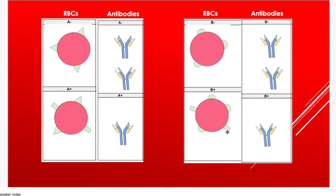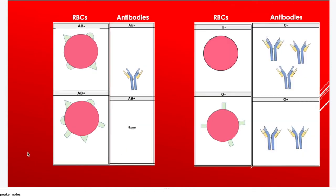An A negative person cannot receive A positive blood because, although the A antigen is compatible, their anti-Rh antibodies will bind to the Rh antigens on the donated cells, causing agglutination. AB negative blood has only Rh antibodies; AB positive has no antibodies. O negative has antibodies against A, B, and Rh antigens; O positive has anti-A and anti-B antibodies.